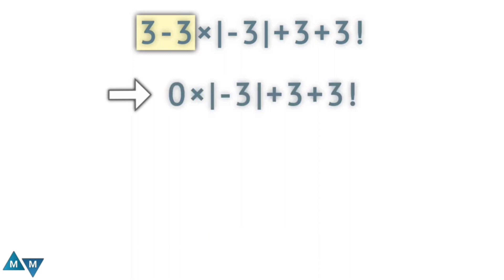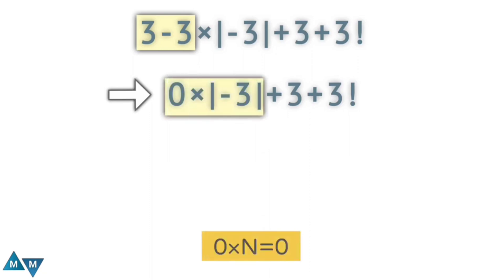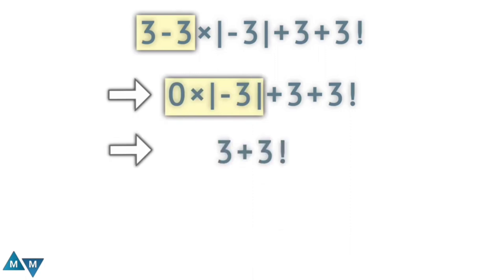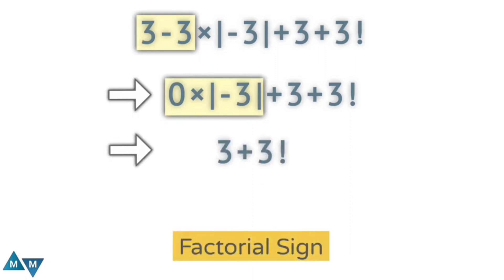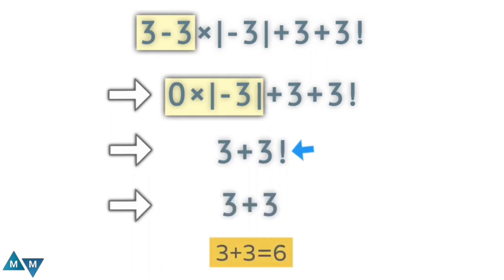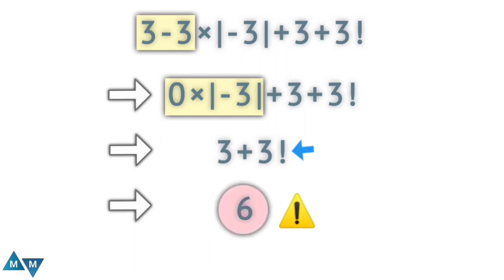In mathematics, zero times any number gives zero, so it becomes three plus three factorial. Many people don't notice the factorial sign and write the expression as three plus three, which equals six. So the answer in this case would be six — but this is wrong. This is the wrong way to solve it.